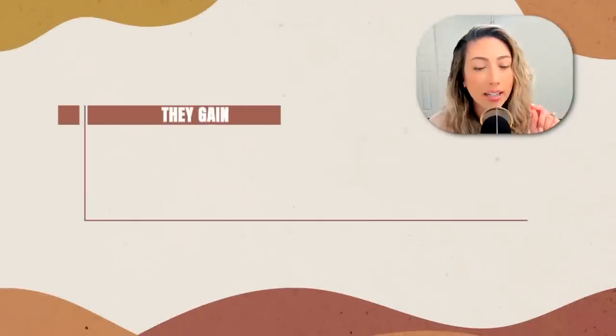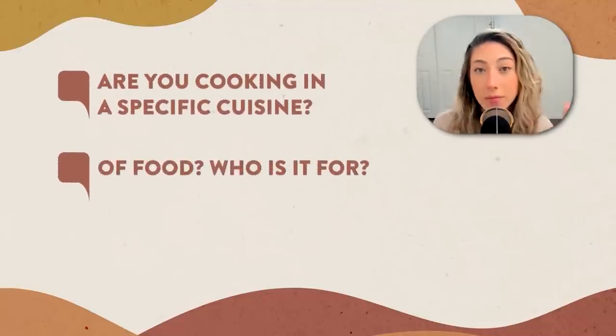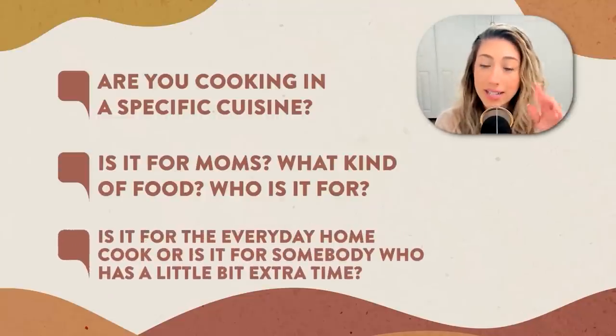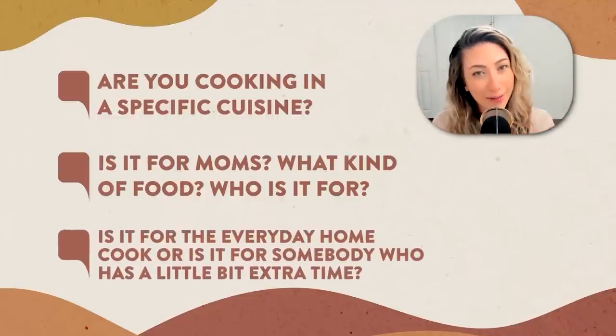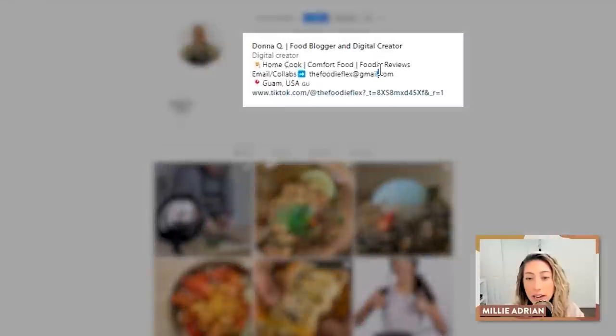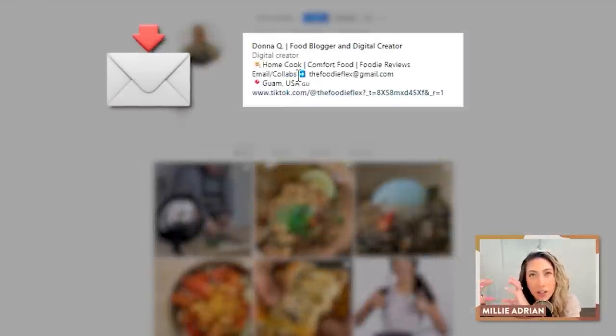So what are they gaining? They gain food tips, they learn food recipes, quick and easy meals. Are you cooking a specific cuisine? Is it for moms? What kind of food? Who is it for — is it for the everyday home cook, or somebody who has a little extra time to put extra love into their food? Who is it for, what kind of food, and what do they gain when they press that follow button? Less about you and your content and more about the person you want to follow you. If you need more character space in your bio, instead of writing 'email collabs,' you could just use the email envelope emoji to save characters so you can really expand on that first sentence.